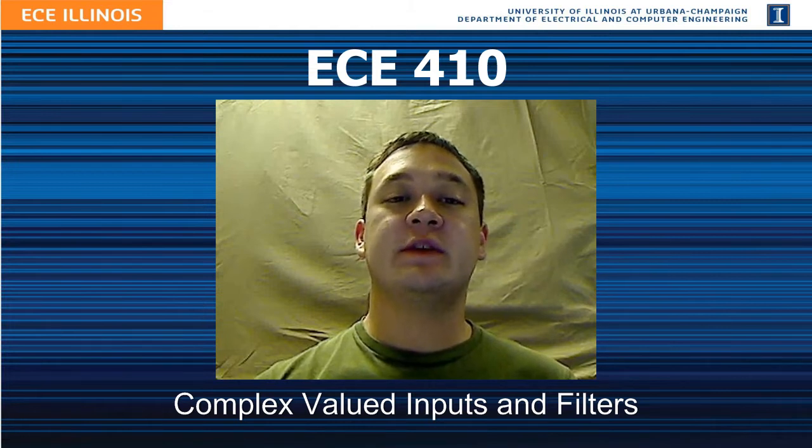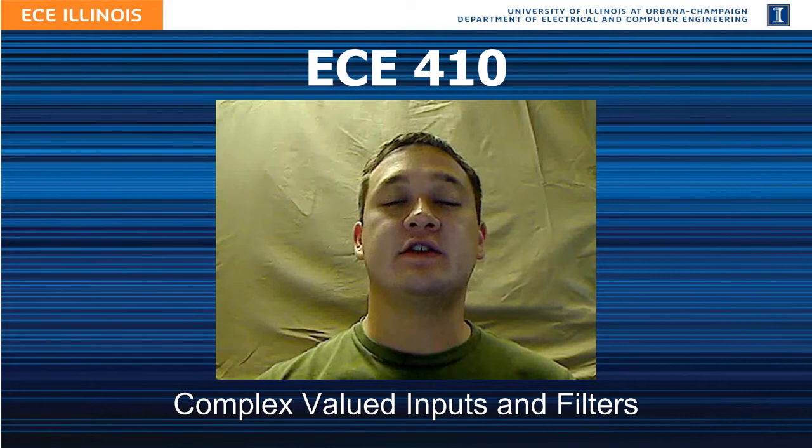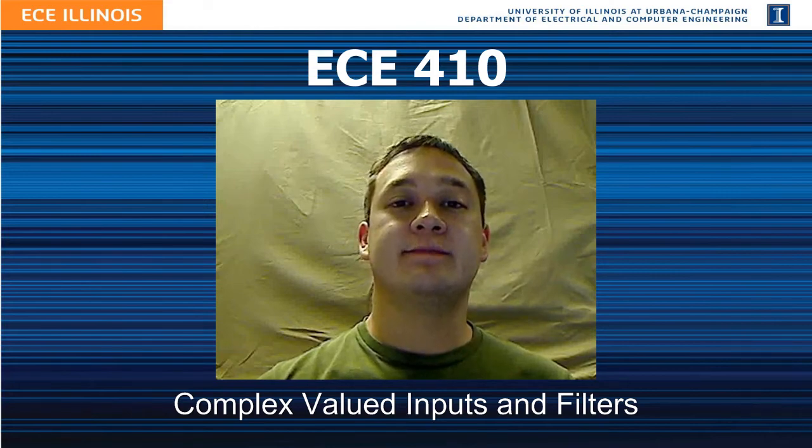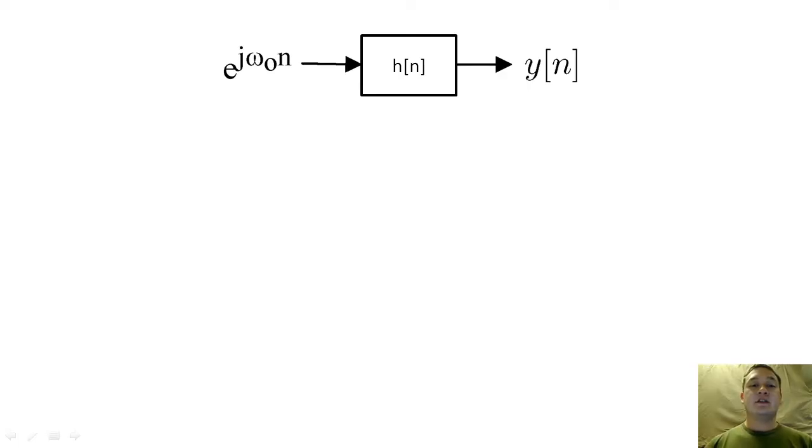These systems are difficult to implement because we want to have real-valued adders and multipliers. If x of n is complex-valued, then I can take the form of a summation of e to the j omega naught n terms.